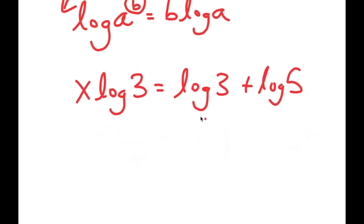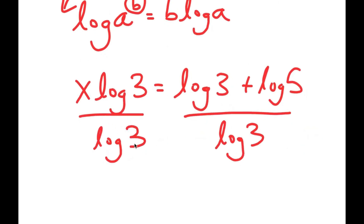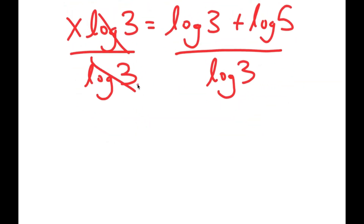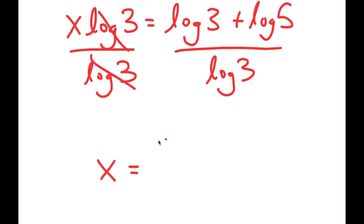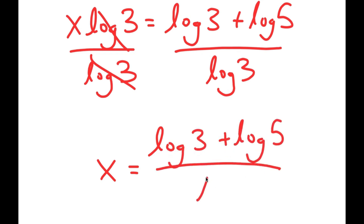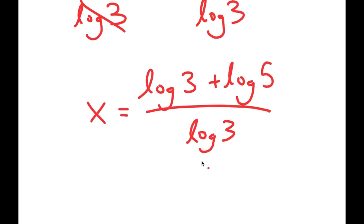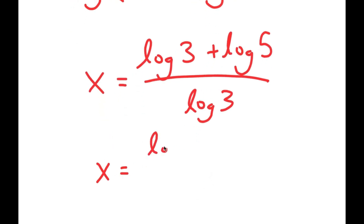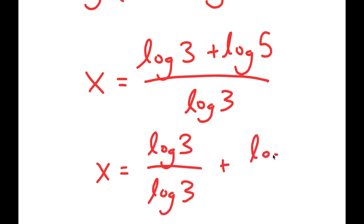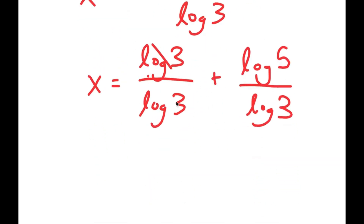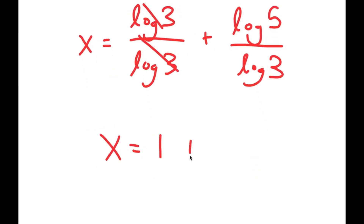Now from here, I'm going to divide both sides by log 3. So I get log 3 plus log 5 over log 3, which is the same thing as log 3 over log 3 plus log 5 over log 3. Log 3 over log 3 cancels out, so I get x is equal to 1 plus log 5 over log 3.